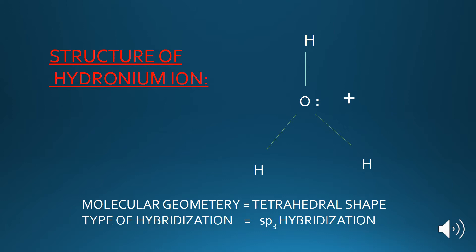What is the type of hybridization in case of the hydronium ion? Looking at the structure of the hydronium ion, the central atom is oxygen, and four electron pairs are attached to it. When four electron pairs are attached around the central atom, the type of hybridization is sp3 and the molecular geometry or shape is tetrahedral.